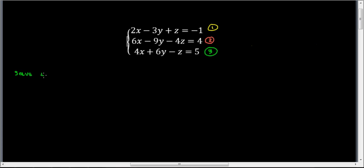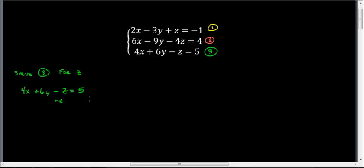It doesn't matter which equation or which variable you pick. I'm going to solve equation 3 for z, because what I'm going to do is substitute that value of z into the other two equations. Starting with 4x plus 6y minus z equals 5, I add z to both sides and subtract 5 from both sides, so that z is alone on the right. I get 4x plus 6y minus 5 equals z.